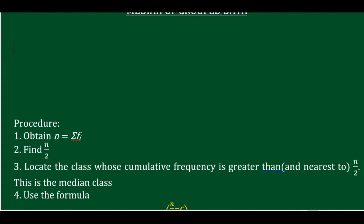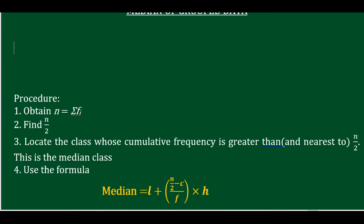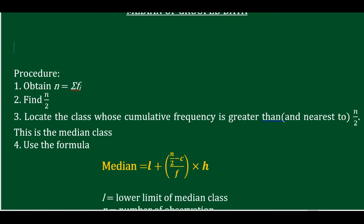So let's see the procedure. We have the frequency, and we find FI. Step 2: locate the class whose cumulative frequency is greater than and nearest to FI.